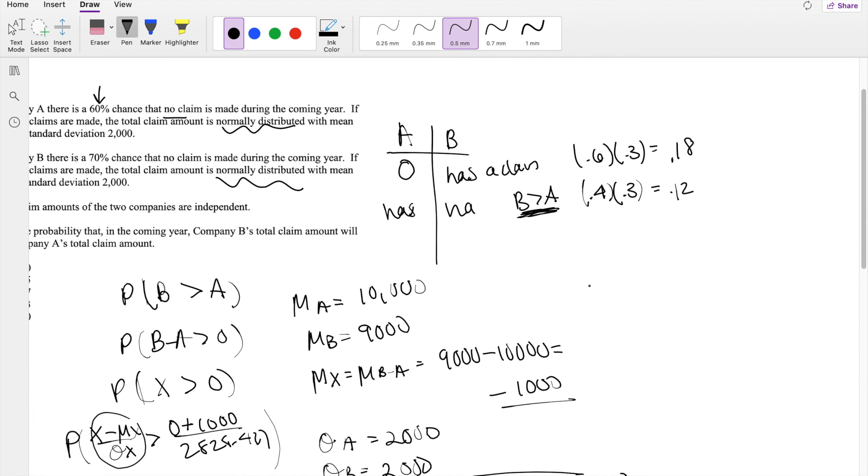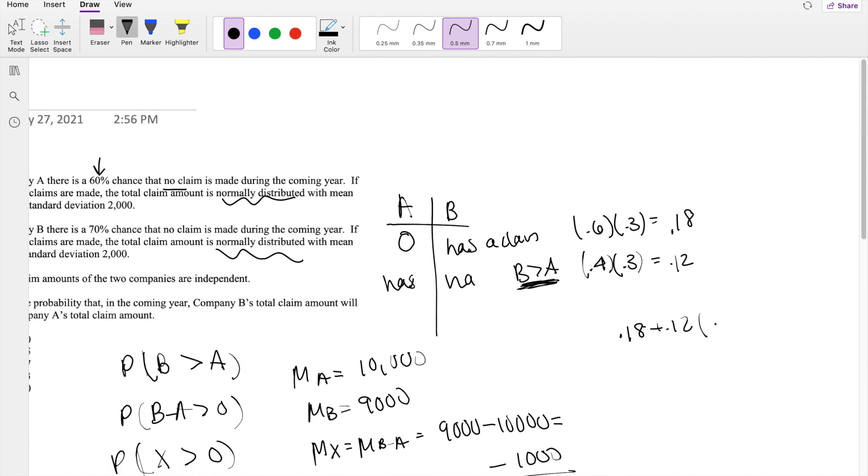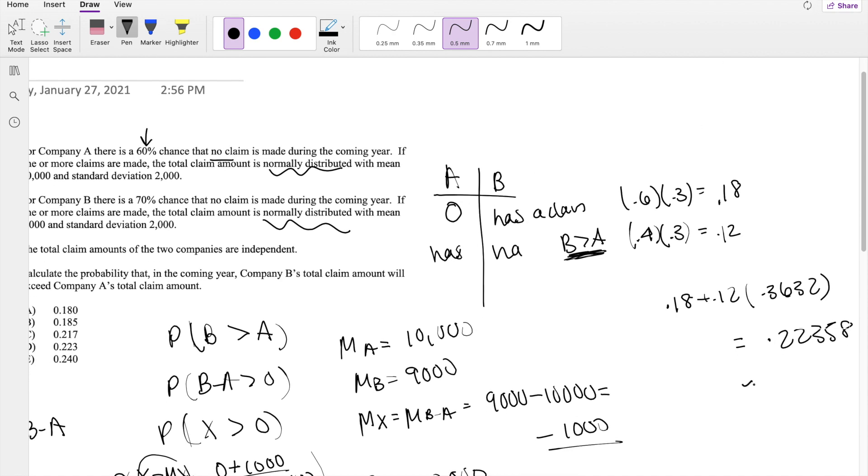But remember, we have to put it back in here. So this is equal to 0.18 plus 0.12 times 0.3632, which is equal to 0.22358, which is approximately equal to 0.223, our answer D.